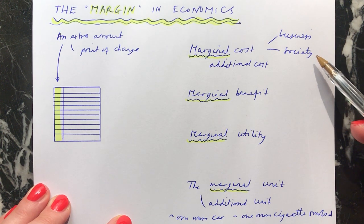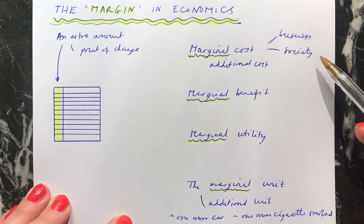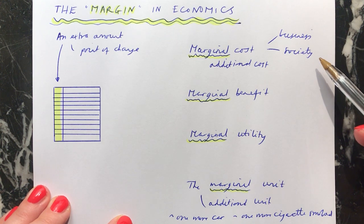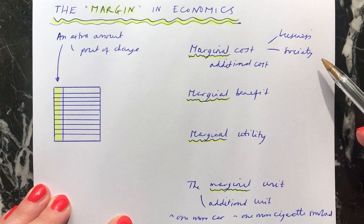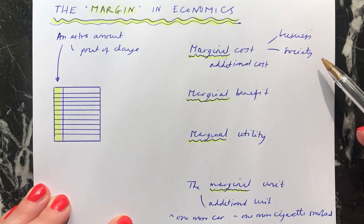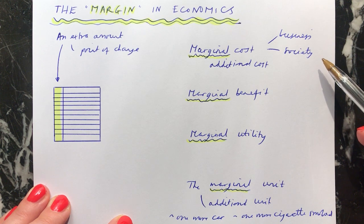It's where an additional amount of something is being consumed or produced. When you're looking at theory of the firm, you're looking at the marginal cost for a business of producing an extra number of units — what's going to be the cost to that business? Every time you produce more units, your costs are going to increase, because of your variable costs. You'll have more variable costs when you produce an extra unit; your fixed costs won't change.